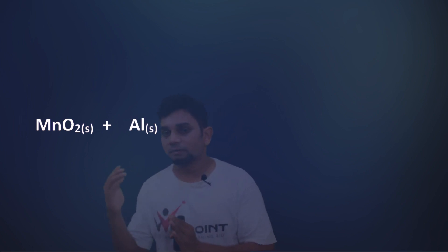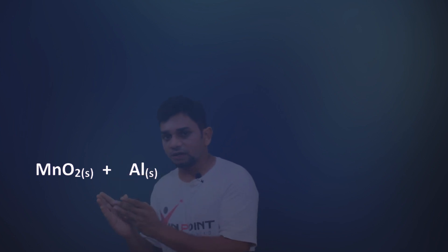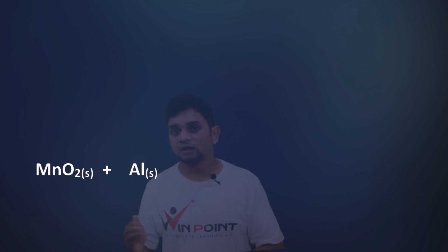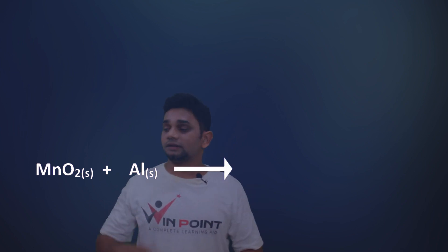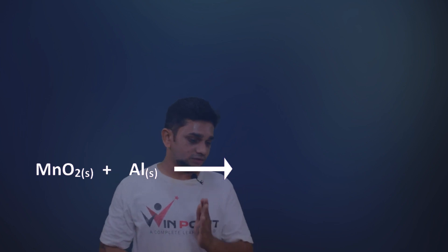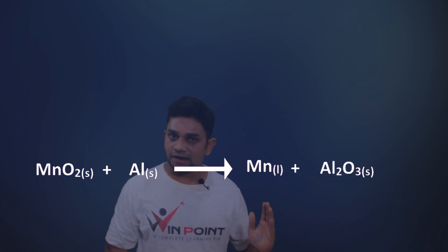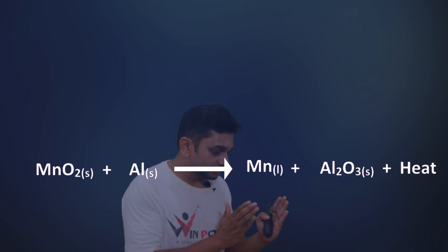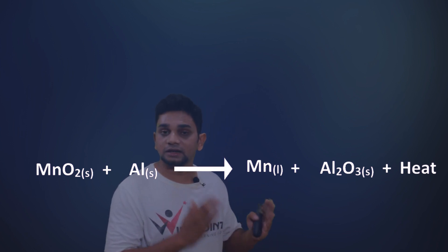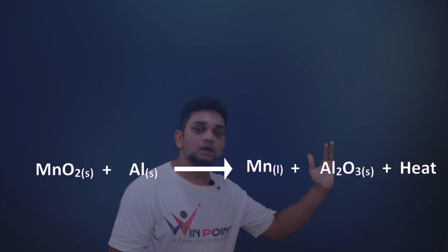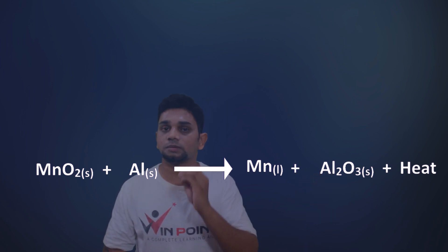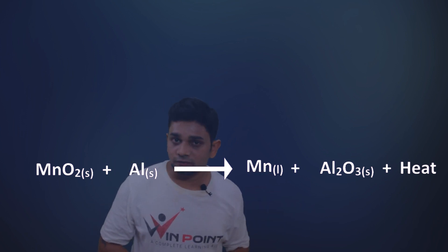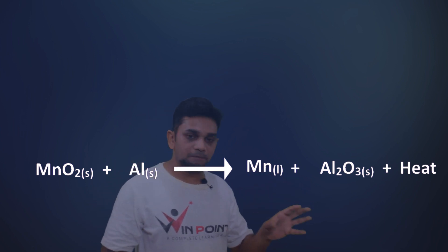Since aluminium is more reactive than manganese, the more reactive element replaces the less reactive one. The reaction is: MnO₂ + Al → Mn + Al₂O₃ + heat. This is a highly exothermic reaction, so a large amount of heat is released. Because of this excess heat, manganese is obtained in molten (liquid) form.